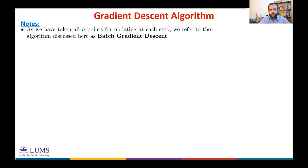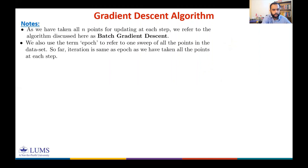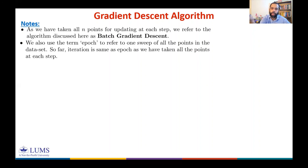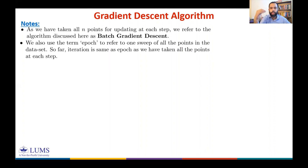Let me also introduce the term 'epoch.' An epoch refers to one sweep of all points in the dataset. In the variant of gradient descent discussed here, one iteration equals one epoch since we take all points at each step. An epoch is complete when you have taken into account all points in your dataset.